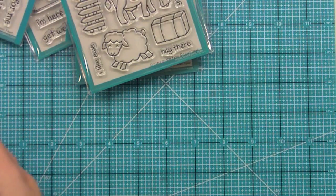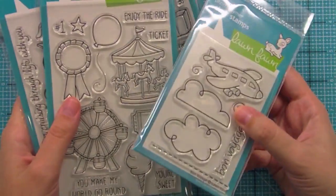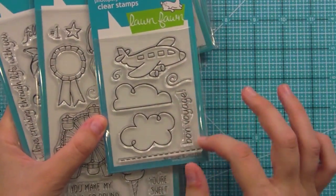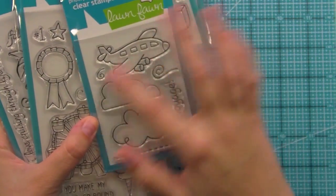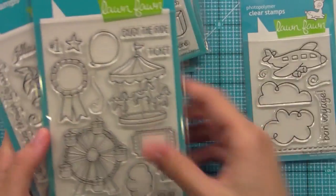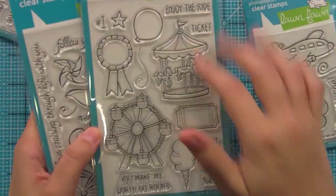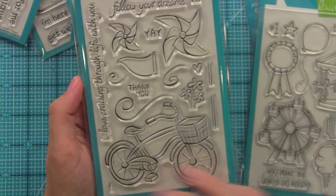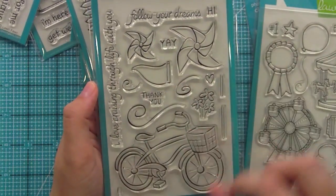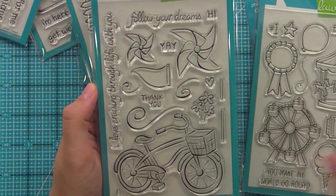Then we have the three that we did for Inspiration Week. So we have Bon Voyage, which is the one with the plane and the clouds and the little line that could be the line off the plane or a stitching line. We've got Admit One, which is our fun fair set, and we've got Cruising Through Life, which is our bike and pinwheels and flags and just summer fun theme.